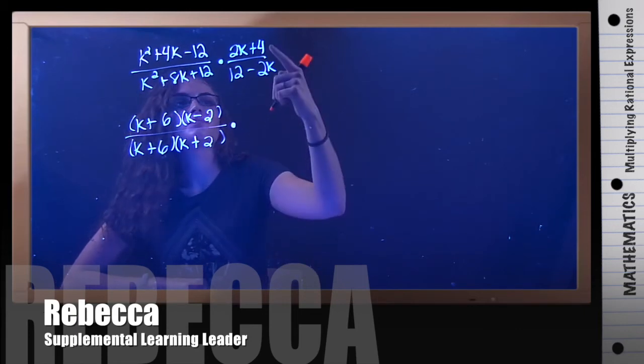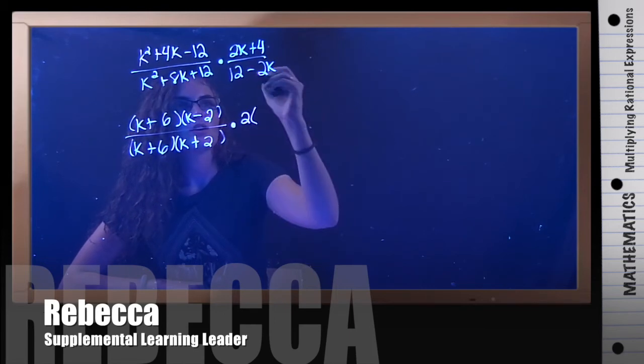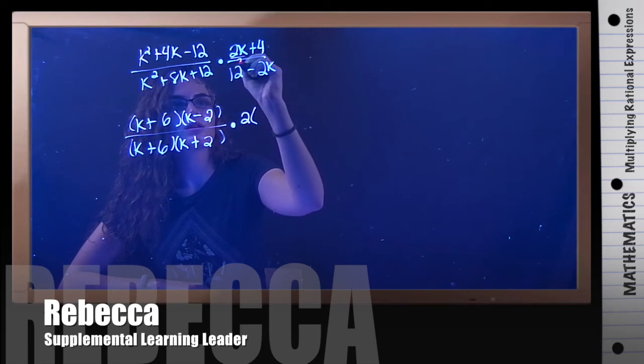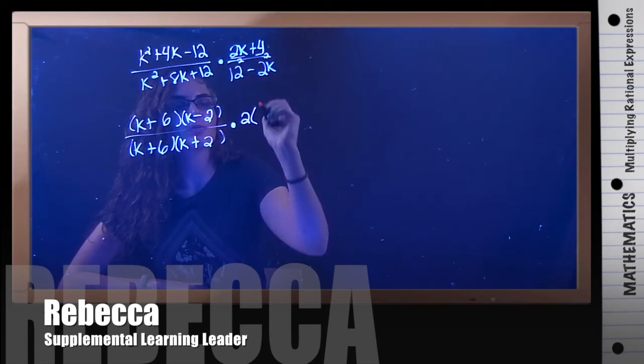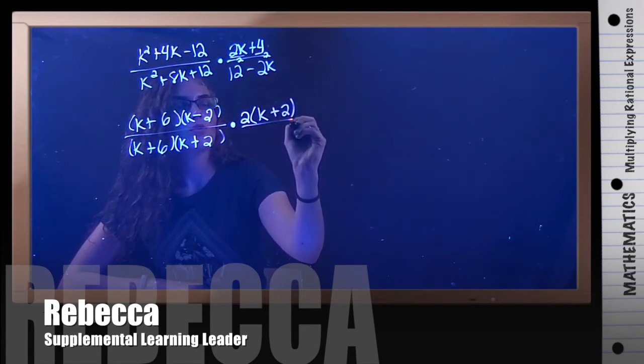So, times the top of this one, there's a GCF of 2. If we divide by 2 on both of these, 2k divided by 2 is k, plus 4 divided by 2 is 2.